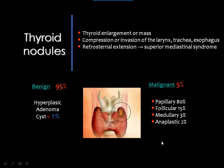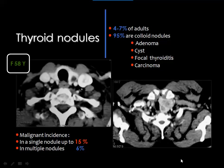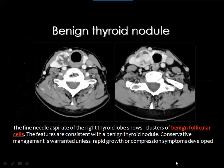Thyroid nodules are benign in 95% of cases and malignant in about 5%. A nodule in the thyroid lobe may represent a cyst, adenoma, focal thyroiditis, or carcinoma, and its nature must be verified by fine needle aspiration cytology guided by ultrasound. The incidence of malignancy in a single nodule is about 15%, while in multiple nodules it is lower, about 6%. Here a nodule with a solid and cystic component was biopsied and showed clusters of benign follicular cells with no evidence of malignancy.